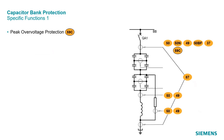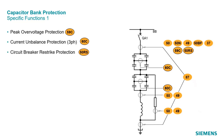As specific functions for the capacitor bank, we have the peak overvoltage protection, which protects the capacitor's dielectric against too high voltages. The current unbalanced protection can be used in a capacitor bank with an H topology, as shown here, to detect the failure of single or several capacitor elements. The circuit breaker restrike protection is responsible for finding restriking currents after the circuit breaker has opened — a phenomenon especially important for circuit breakers of a capacitor bank.